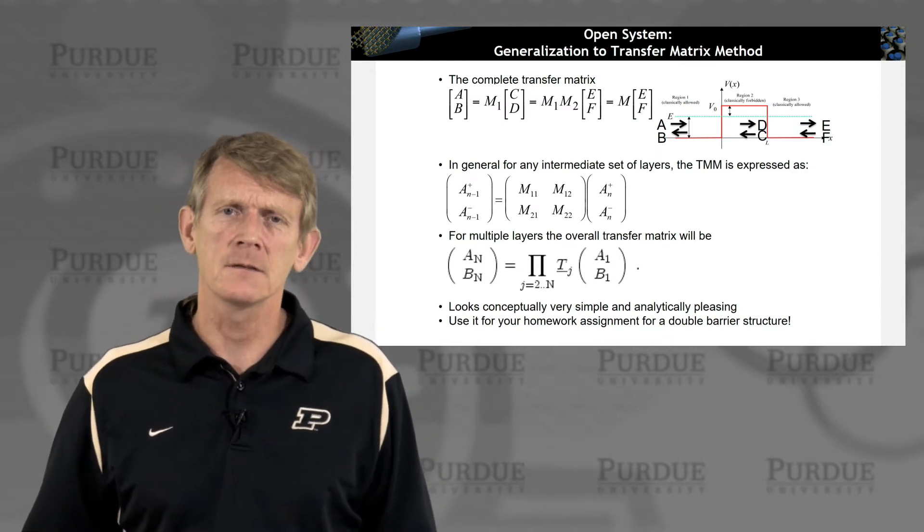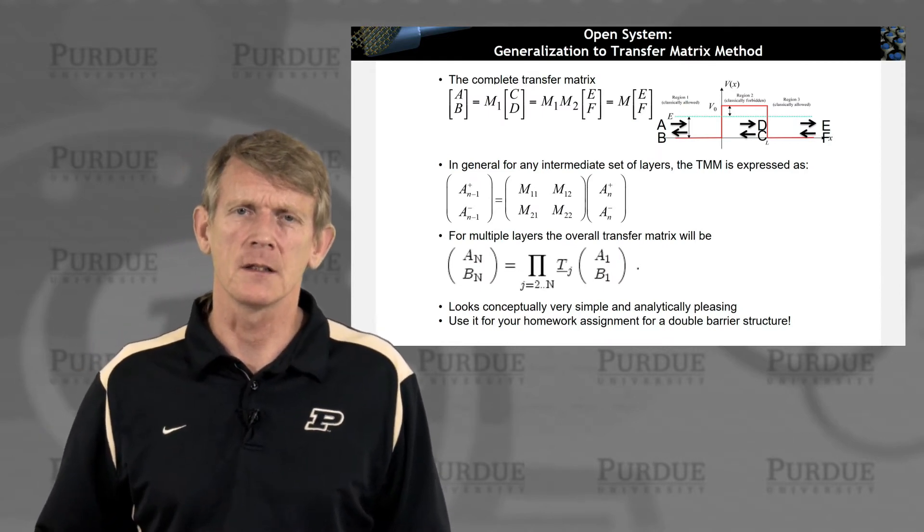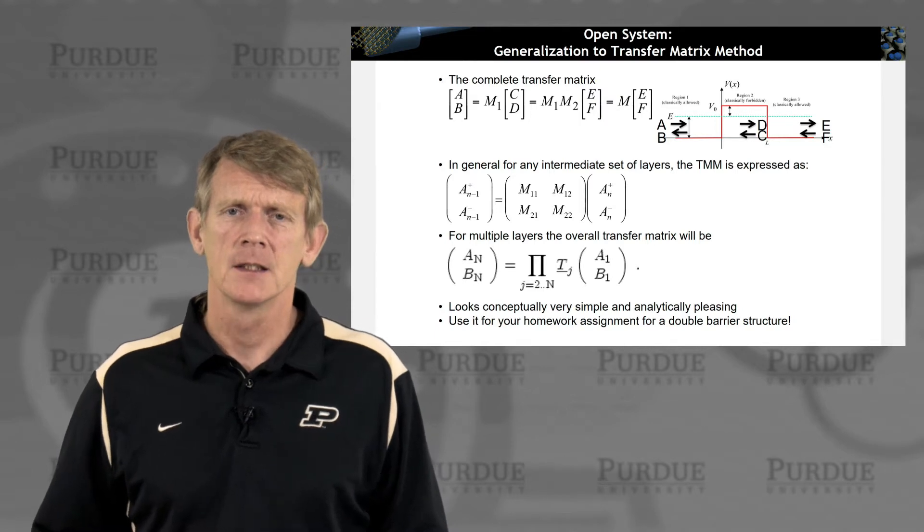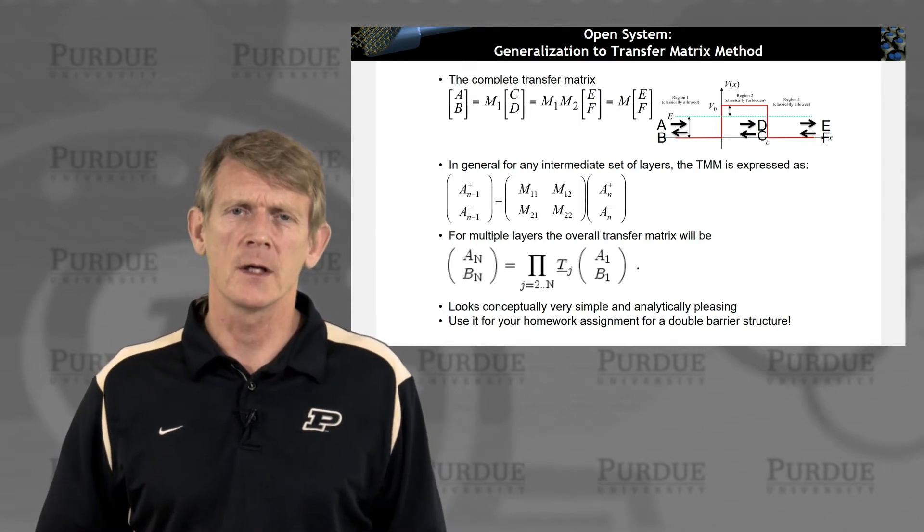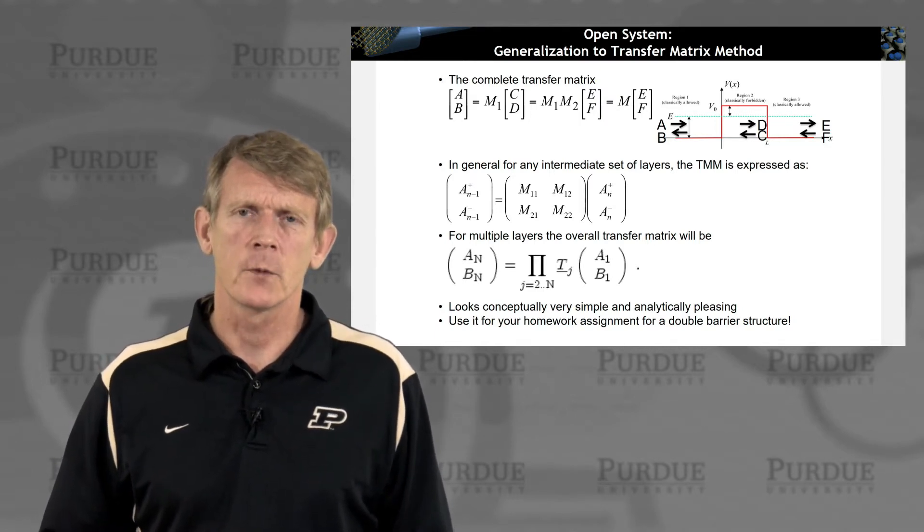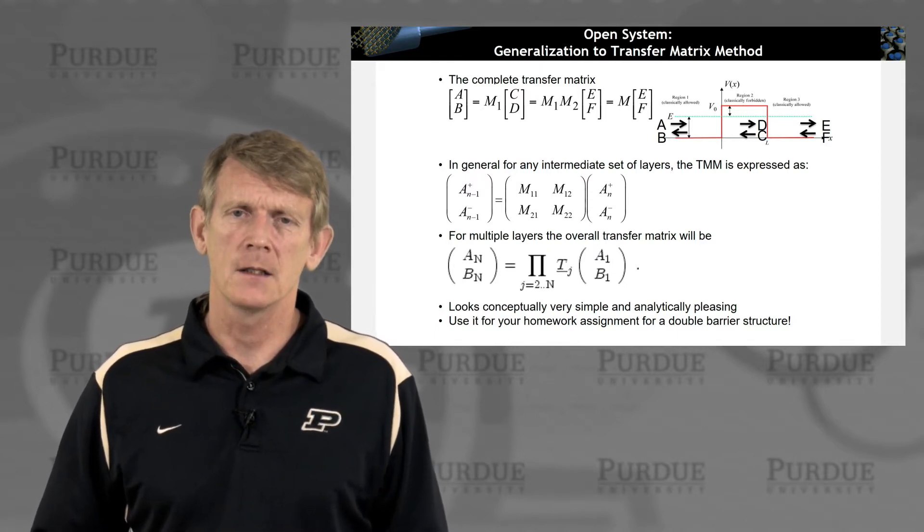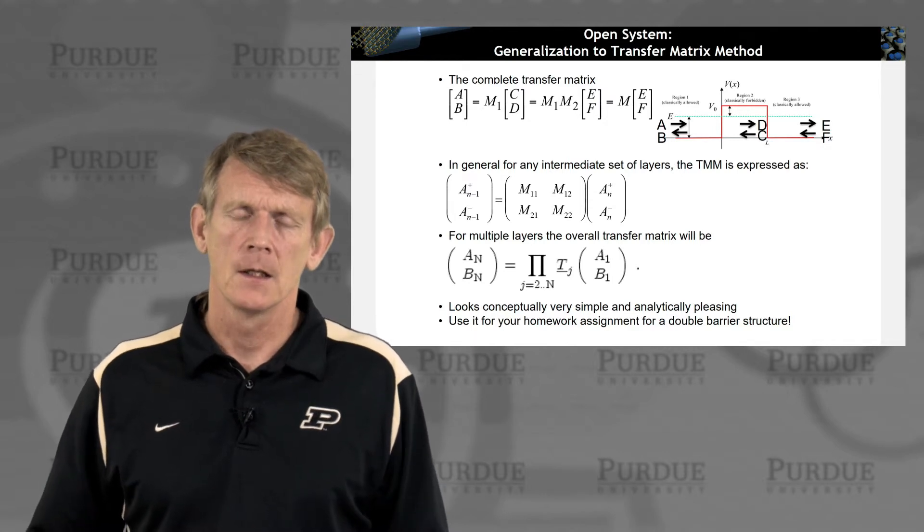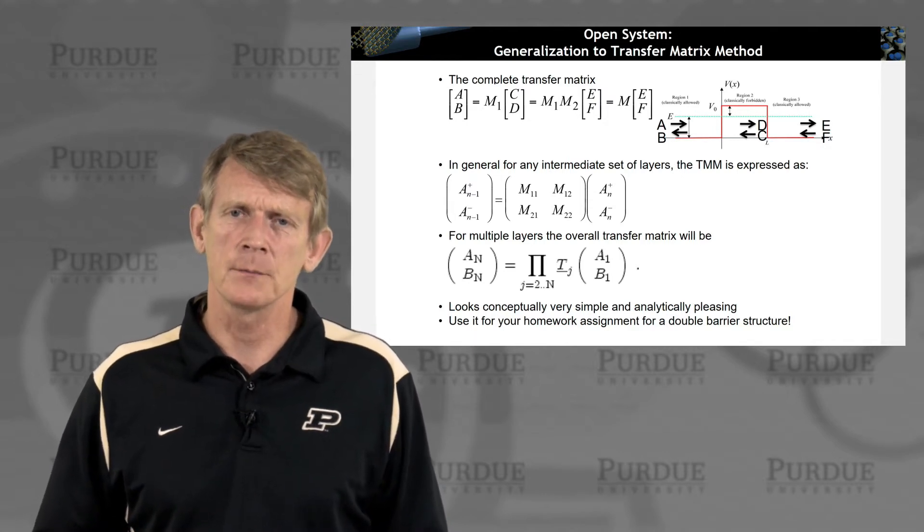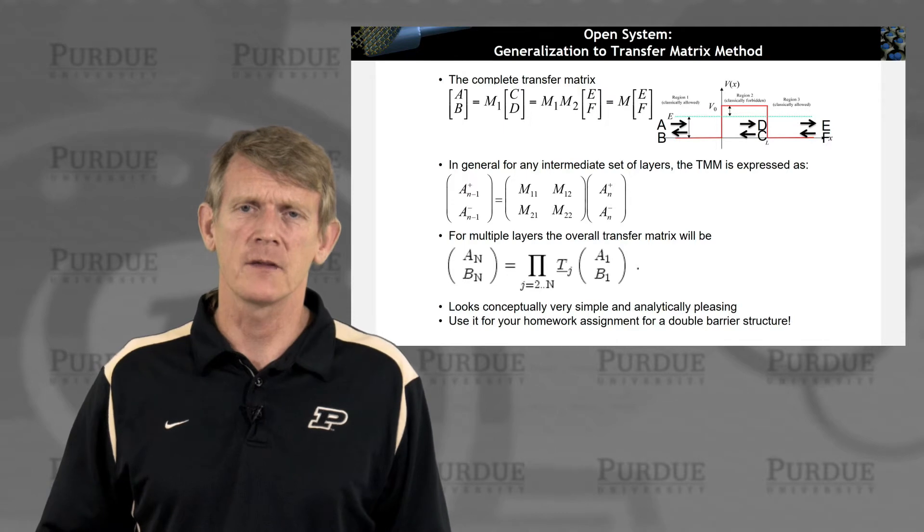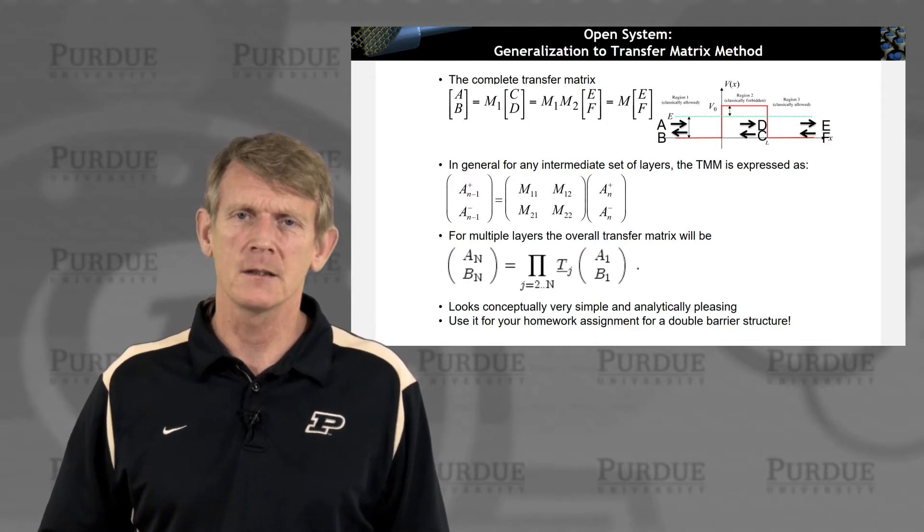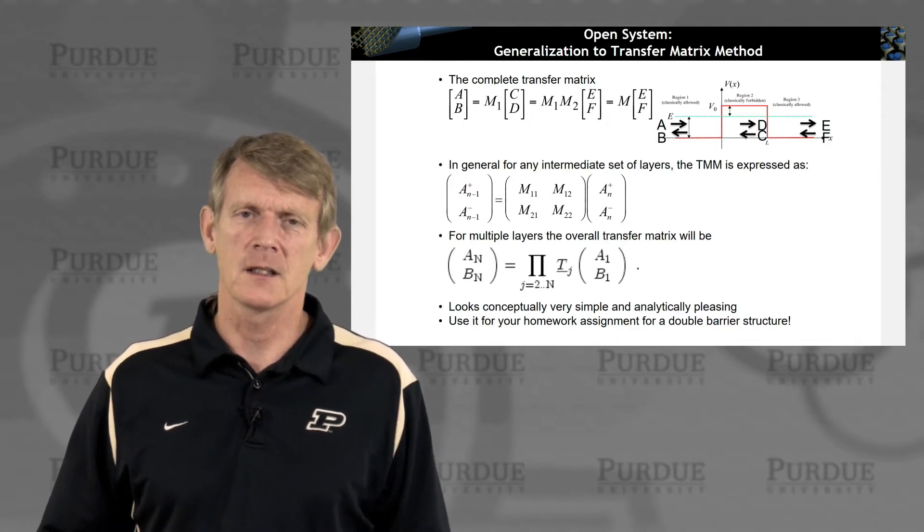In the first segment here, I also showed the transfer matrix method that can be generalized really to any structure where you look at transmission through an object. It is very appealing, and it works well for simple structures like these, where you have flat bands, not too many barriers, not too thick of barriers, etc.